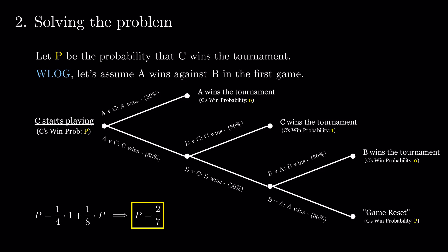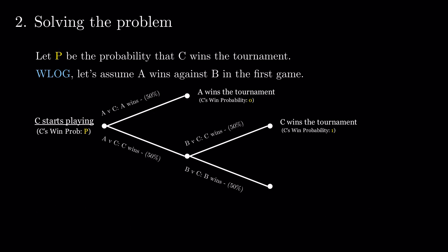This question can become more challenging by changing some of the parameters. One way to do this is by making the players not equal in skill, thus changing the probabilities with which each game outcome occurs. Another one is by changing the number of consecutive games required to win the tournament.